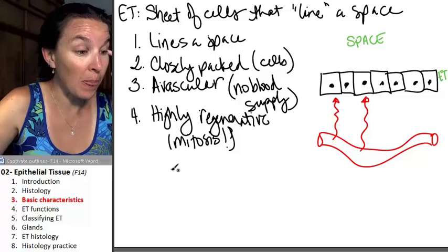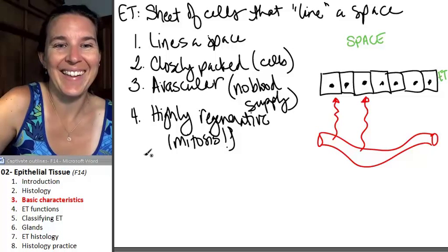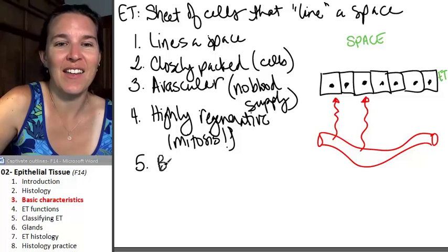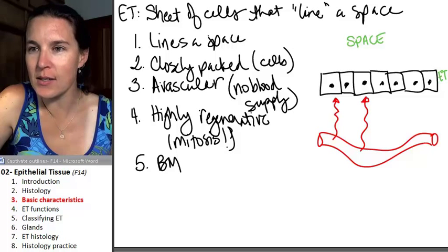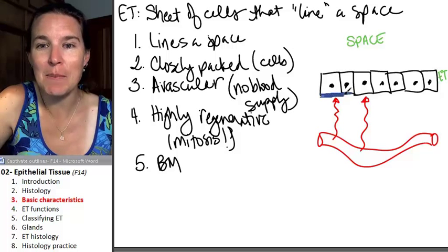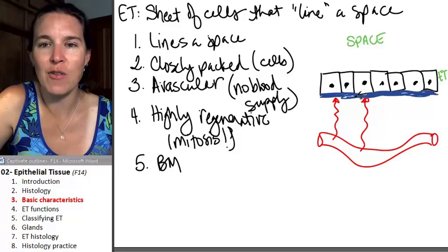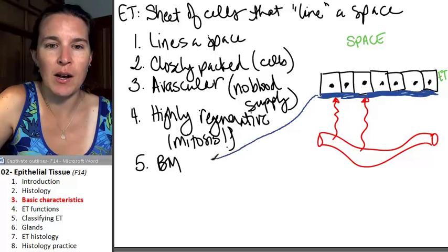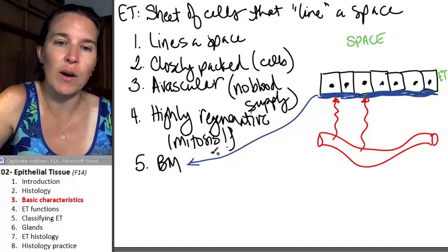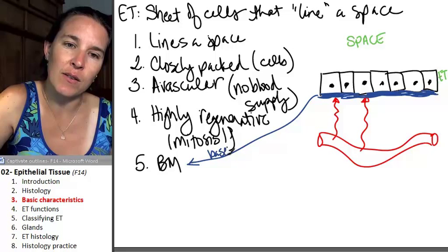All right, what else do you need to know? Ready? They have the BM. What is this BM you speak of? A basement membrane. Epithelial cells, epithelial tissues have a basement membrane. So I'm going to write down basement membrane.